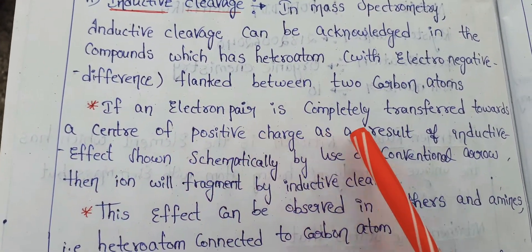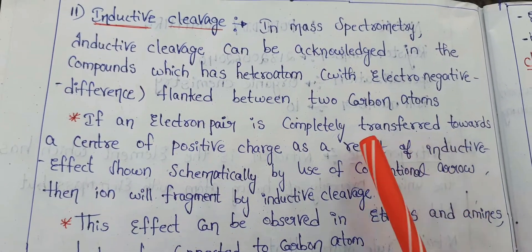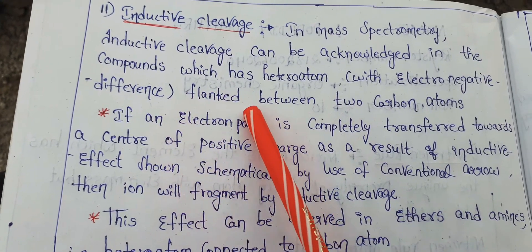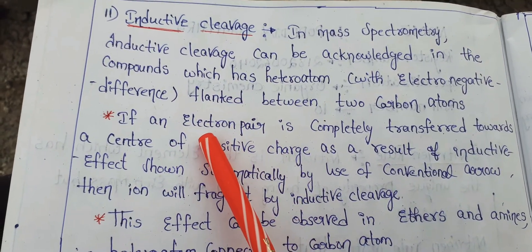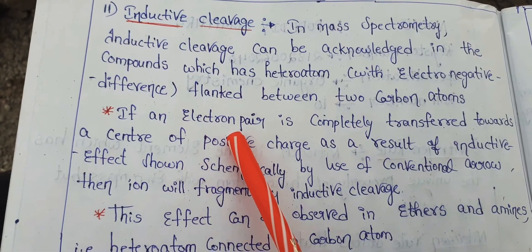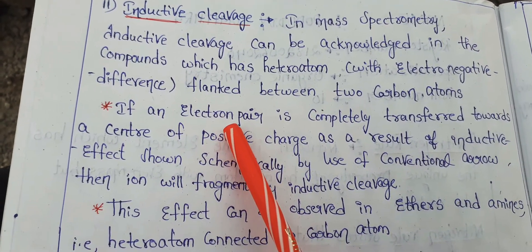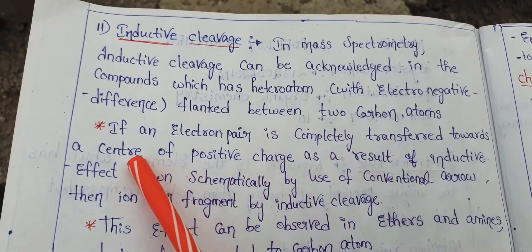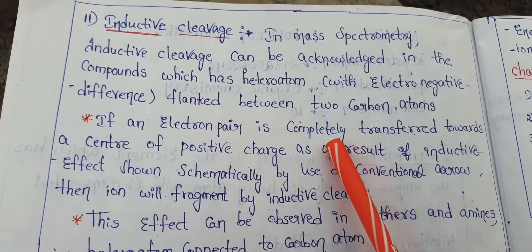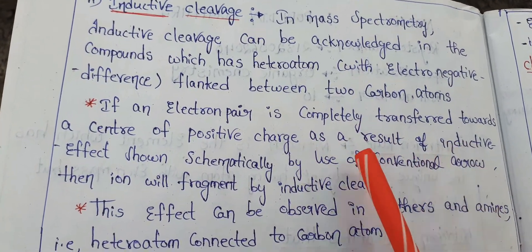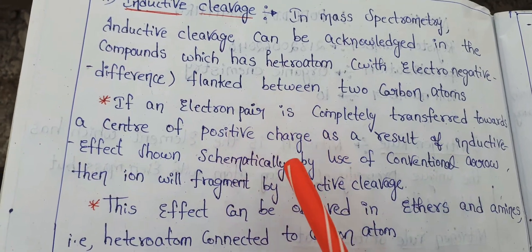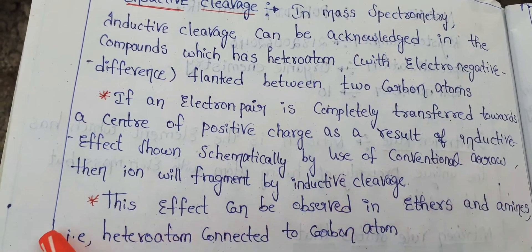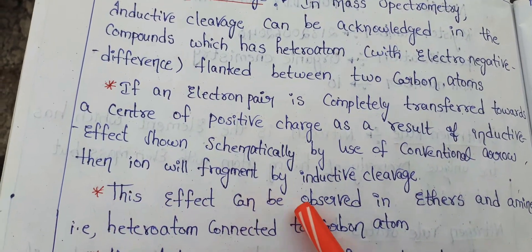If an electron pair is completely transferred towards a center of positive charge — an electron pair meaning a bond, since in a single bond two electrons are present — then as a result of this inductive effect, which can be shown by conventional arrows, the ion will fragment by inductive cleavage.